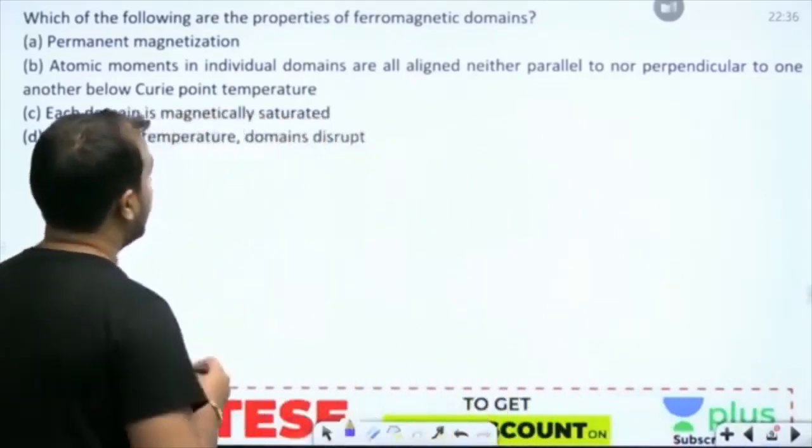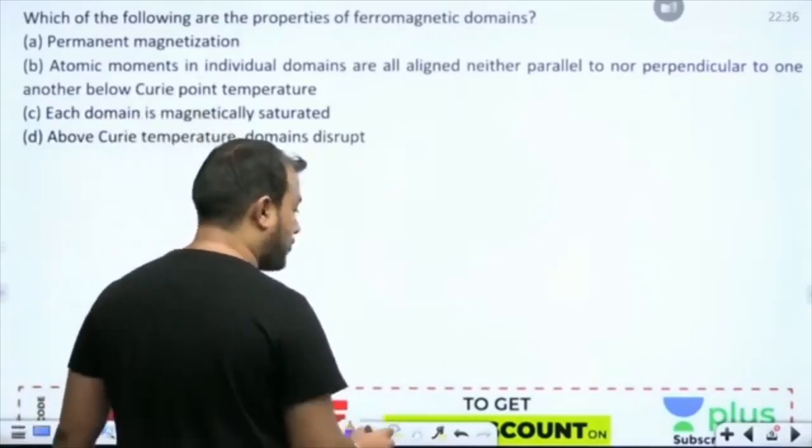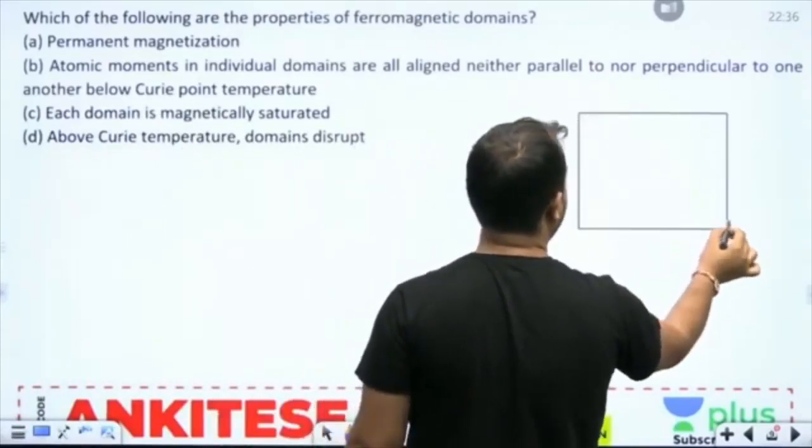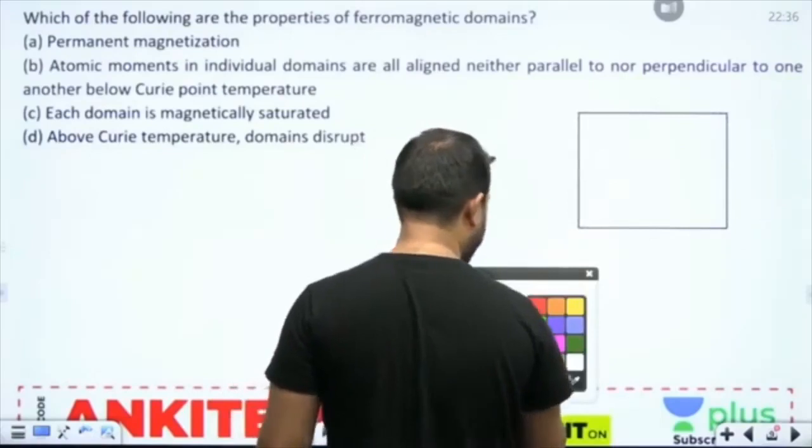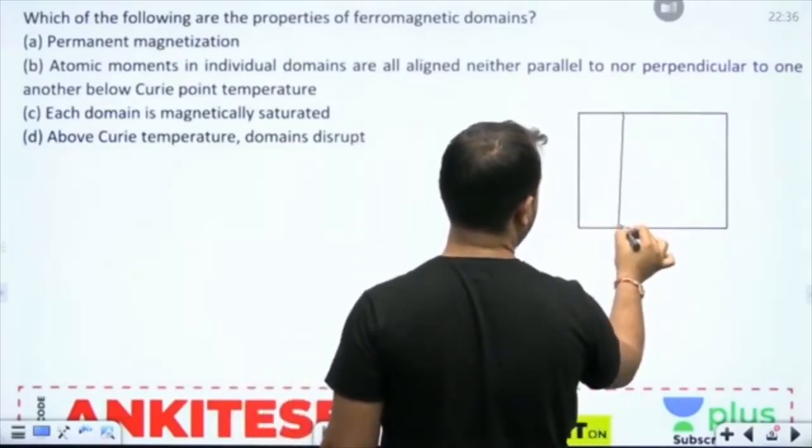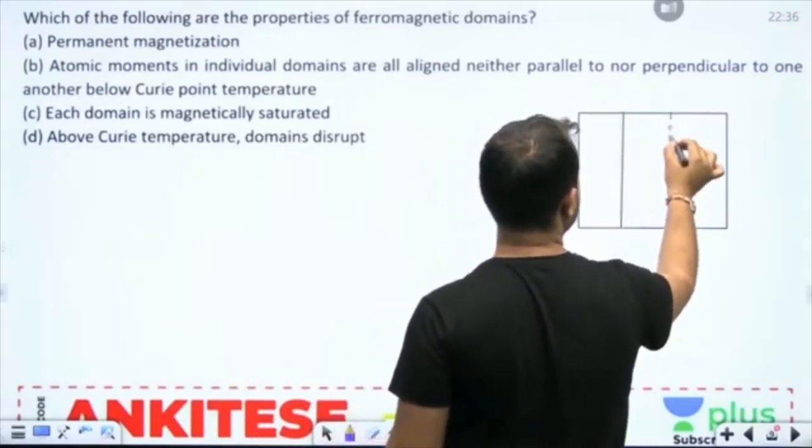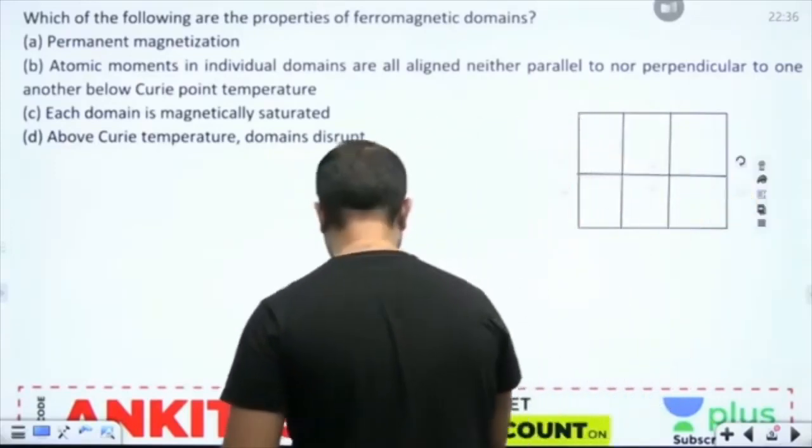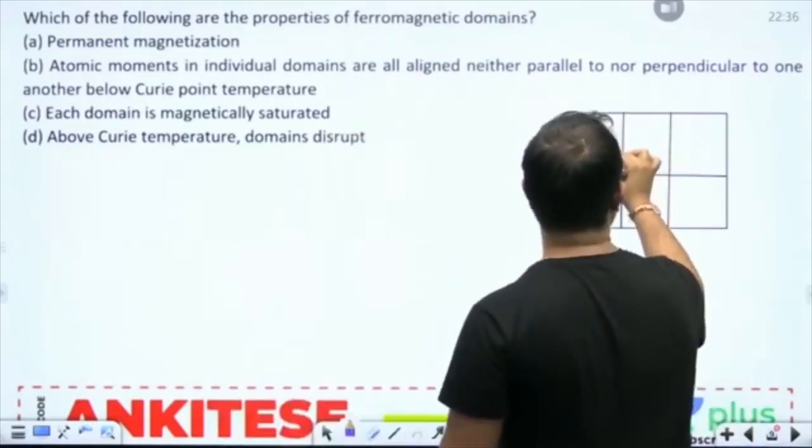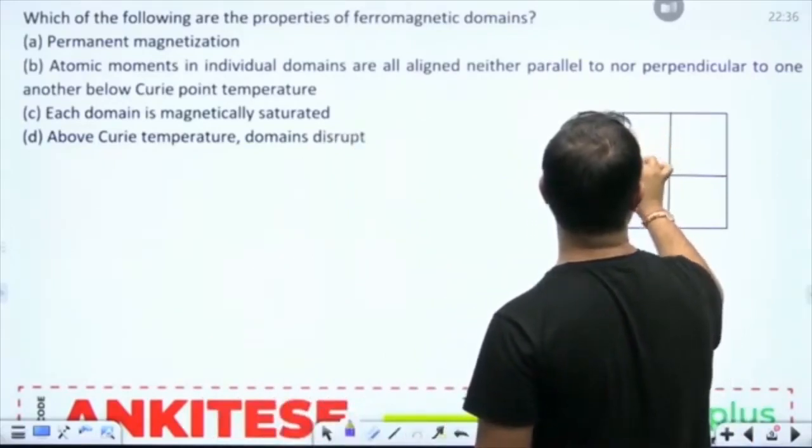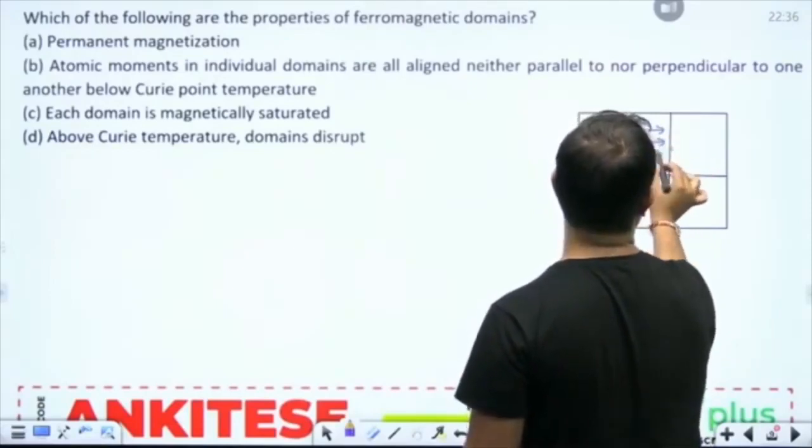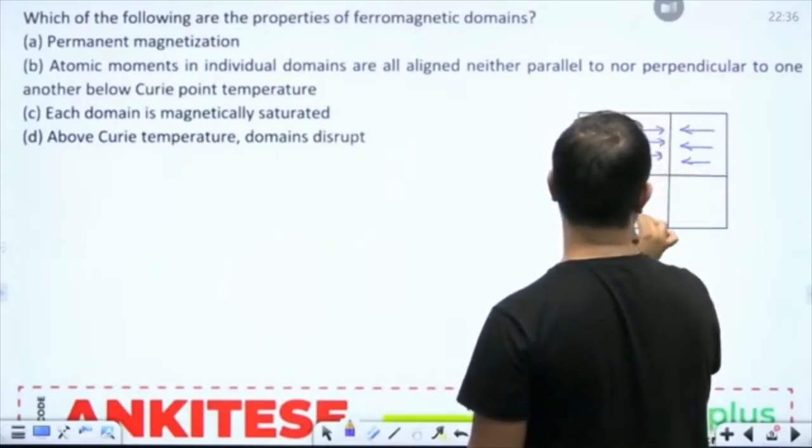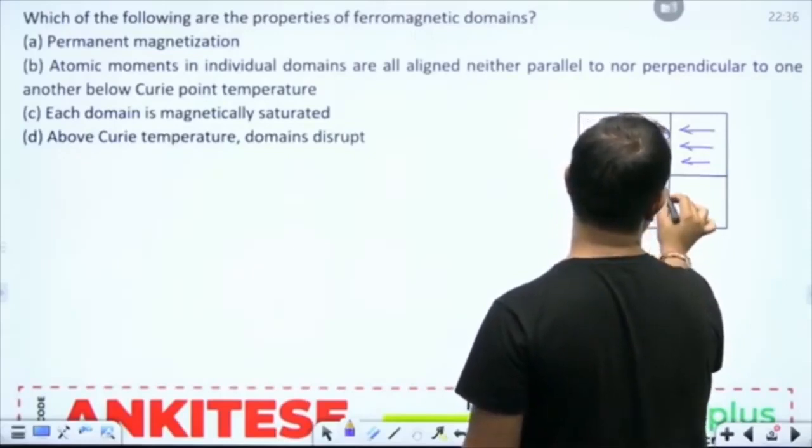What are the properties of ferromagnetic domain? First of all, what is this domain? I have taught domain theory in my machine's lecture that any ferromagnetic material is basically divided into multiple sections like this. Each section, my friend, is called as a domain. In each domain, you have dipoles that are aligned, that is the domain theory.